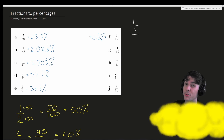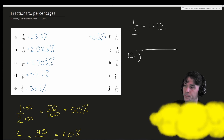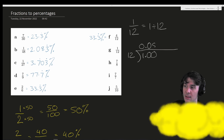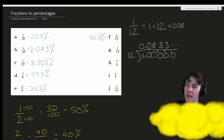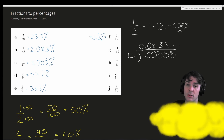4 twelfths is also difficult to turn into an equivalent fraction with a denominator of 100, but before turning it into a decimal we simplify it — this is 1 third, the same as we got for 2 sixths. That means 4 twelfths has the same percentage answer: 33.3 repeater percent. Then for 1 twelfth, we do 1 divided by 12: 12 into 1 is 0 times; 12 into 10 is 0 times; 12 into 100 is 8 times (96), remainder 4; 12 into 40 is 3 times (36), remainder 4 — and this repeats. So the decimal is 0.083 repeater, and multiplying by 100 gives 8.3 repeater percent.